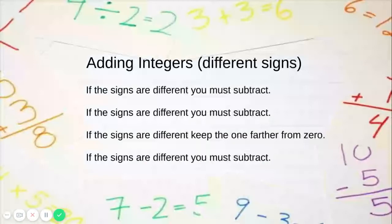If the signs are different, you must subtract. If the signs are different, you must subtract. If the signs are different, keep the one farthest from zero. If the signs are different, you must subtract.